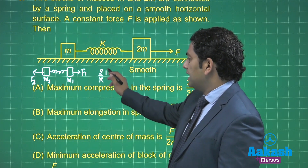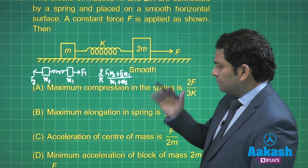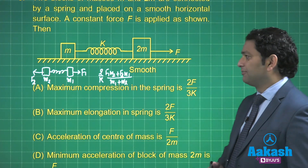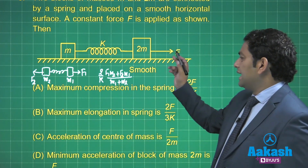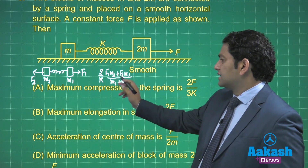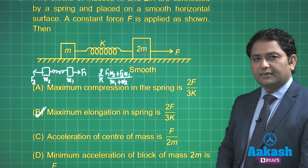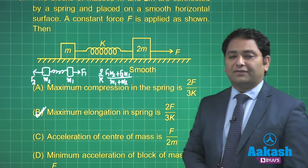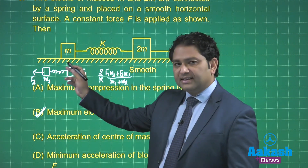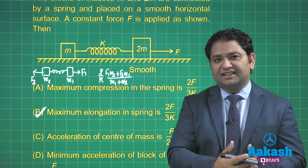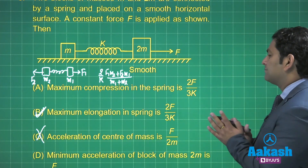Applying the elongation formula with F₁ = F, F₂ = 0, m₁ = m, m₂ = 2m: the numerator gives F times 2m, the denominator is 3m, so maximum elongation equals 2F by 3k. Option b is correct. For the acceleration of center of mass: total force is F, and the spring force cancels when both blocks are taken as a system. So the CoM acceleration is F divided by 3m. Option c, which likely states a different value, is incorrect.